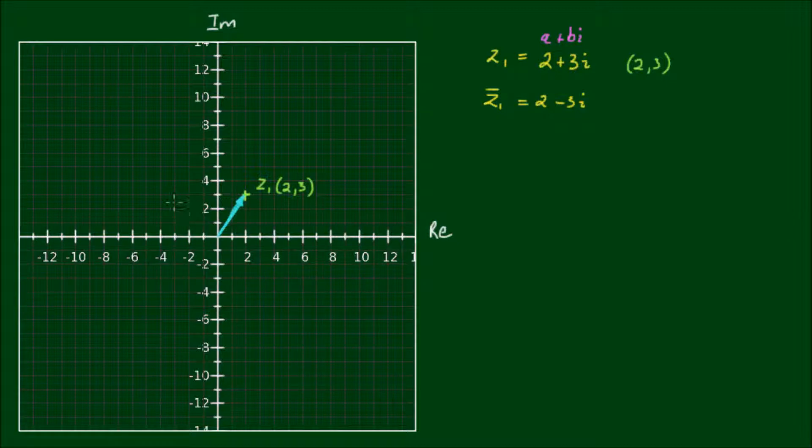And again, if we plot that on the complex plane, the coordinates are 2, negative 3. So z bar is 2, negative 3.